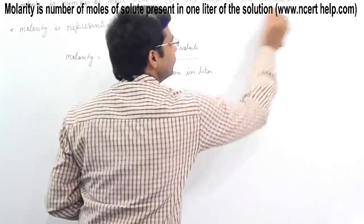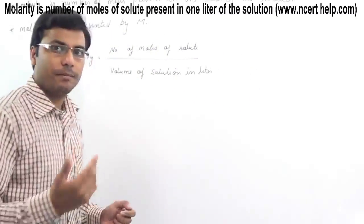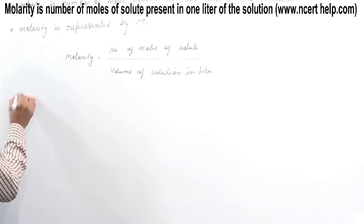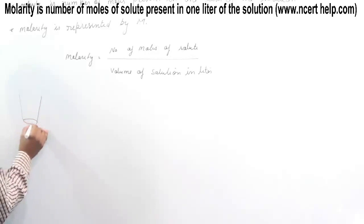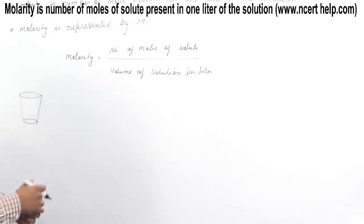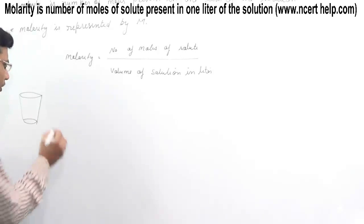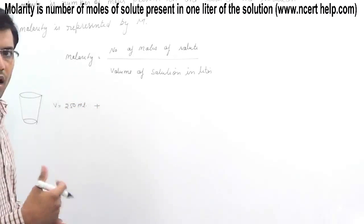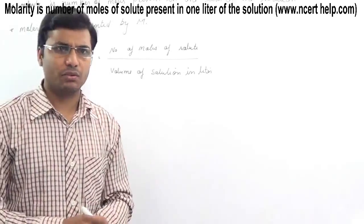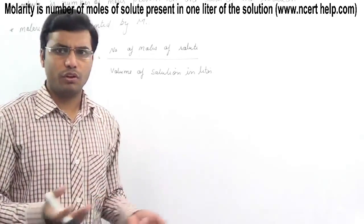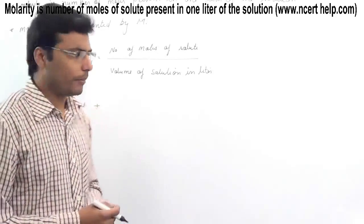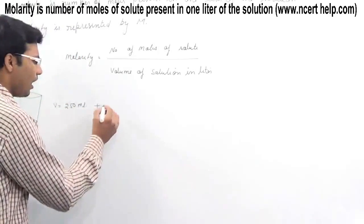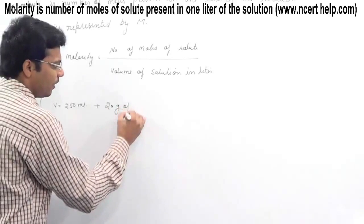Now let's take another example to demonstrate how we calculate molarity. Take a glass of water — the volume of a glass of water is approximately 250 mL. So we are taking a volume of 250 mL and mixing in a solute. We can mix sodium chloride, sodium hydroxide, calcium carbonate, or anything.